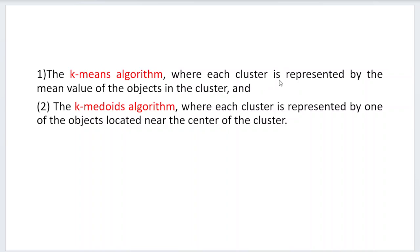Two important algorithms are the k-means algorithm, where each cluster is represented by the mean value of the objects in the cluster, and the k-medoids algorithm, where each cluster is represented by one of the objects located near the center of the cluster. In k-means, clustering is based on mean value; in k-medoids, it is based on representative objects.